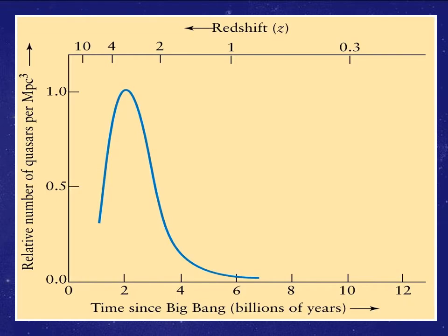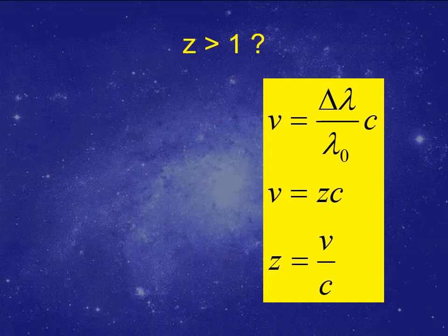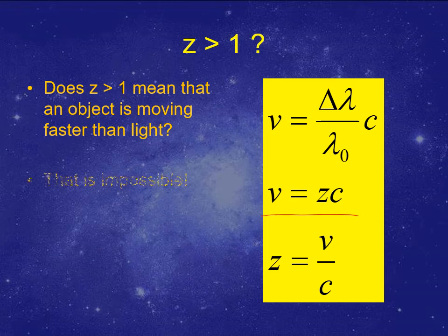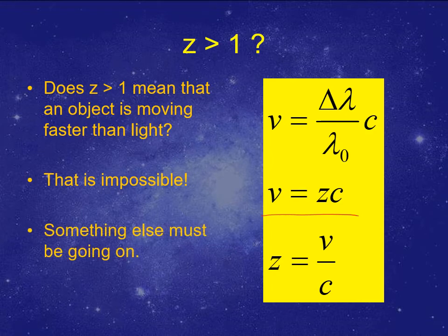Some quasars had redshifts of 0.5 or 0.8. A lot of them had redshifts of 2, 3, or 4. But wait — how can you have a redshift bigger than 1? If velocity equals redshift times the speed of light, something bigger than 1 would mean a velocity bigger than the speed of light. Does that mean they're actually going faster than light? No, of course not. They can't go faster than light. So what does that mean? It means that life is more complicated.